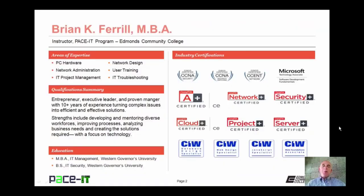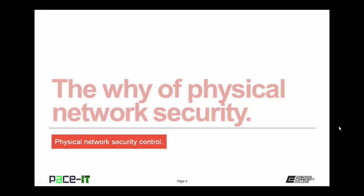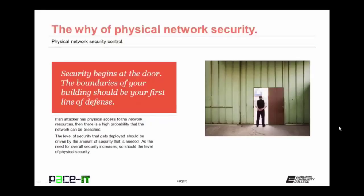Hello, I'm Brian Farrell and welcome to Pace IT's session on Physical Network Security Control. Today we're going to be discussing the why of physical network security, and then we're going to move on to some physical network security practices. Your network security actually begins at the door. The boundaries of your building should be your first line of defense. If an attacker has physical access to the network resources, then there is a high probability that those network resources can be breached. The level of security deployed should be driven by the amount of security that is needed — as the need for overall security increases, so should the level of physical security.